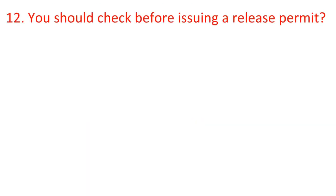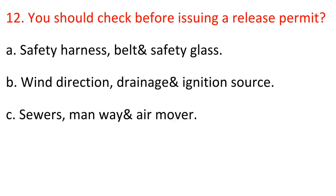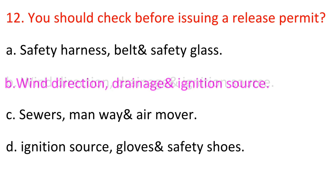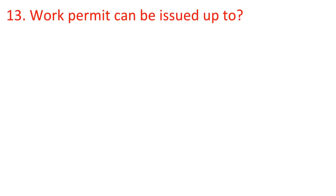Question 12: What should you check before issuing a release permit? A) Safety harness belt and safety glasses, B) Wind direction, drainage, and ignition source, C) Sewers, manway, and air mover, D) Ignition source, gloves, and safety shoes. Answer: B) Wind direction, drainage, and ignition source.